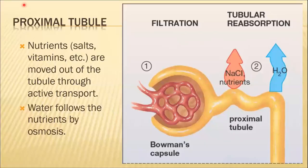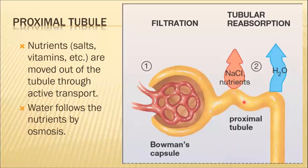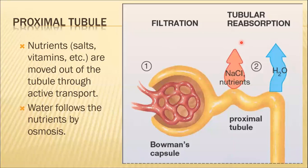Then we have the filtrate, which we call the proximal tubule. Nutrients, salts, vitamins, etc. are moved out of the tubule through active transport. They are reabsorbed via active transport using ATP, and salts and other nutrients are transported. Water also follows by osmosis through the tubule, and all these structures enter the tubular capillaries.